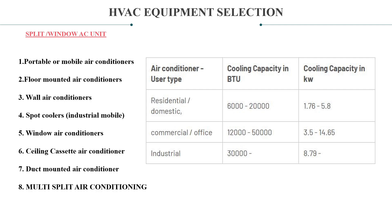As per your user type, air conditioners can be categorized into three types. First is residential and domestic application. Second is commercial and office use. Third is industrial applications.